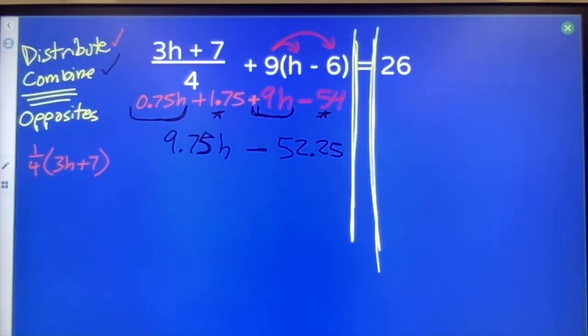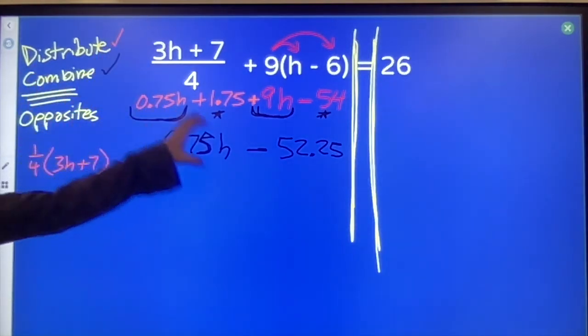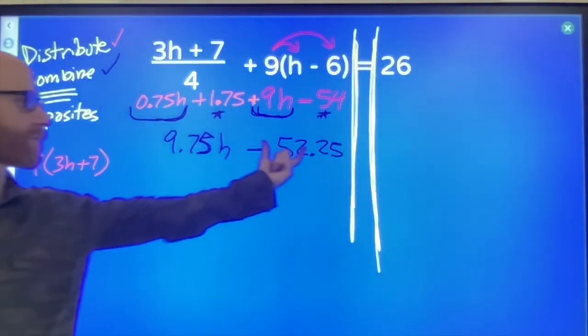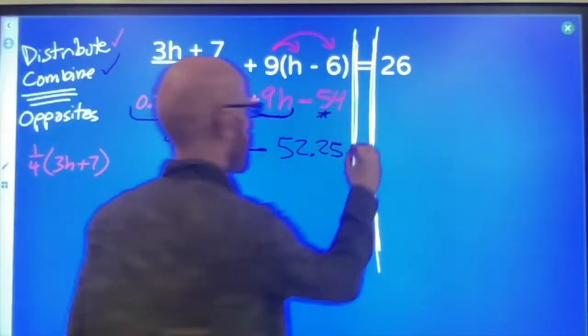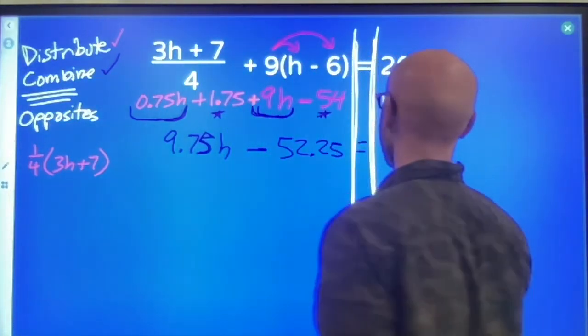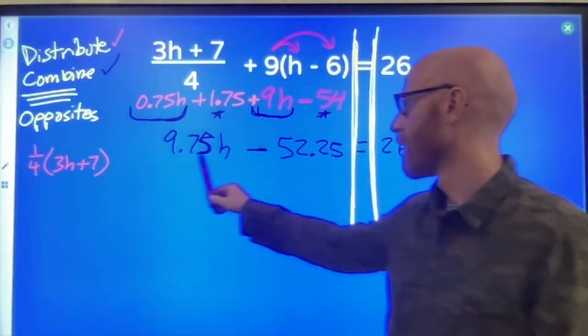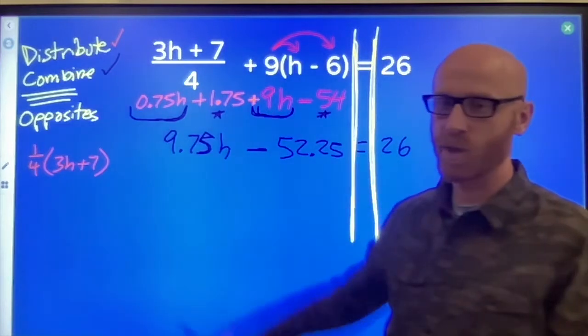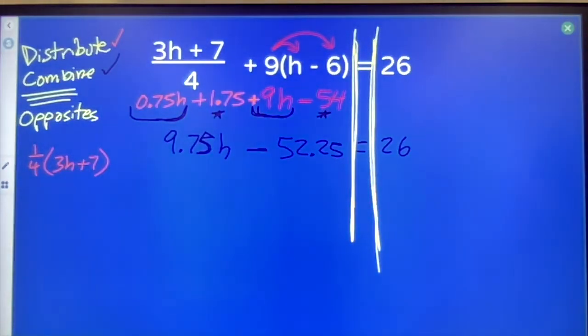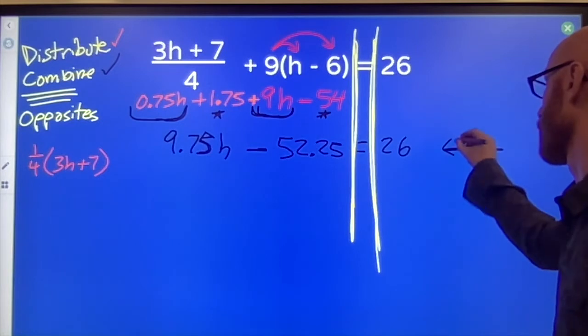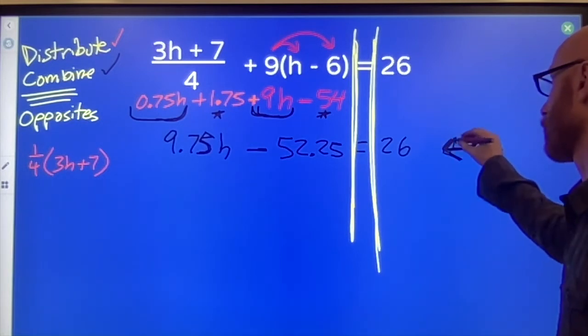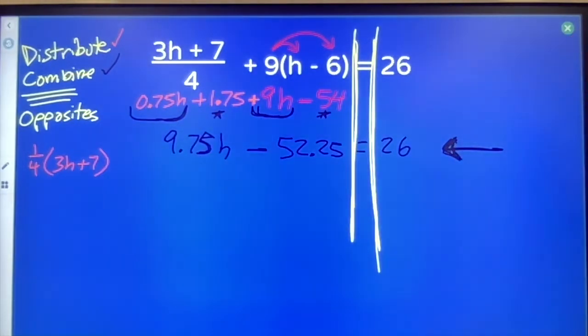I've distributed, I've combined things that could be combined. I can't combine this with this because that's got an h and that doesn't. We haven't messed with the other side yet, but at this point, this setup should look familiar. If you don't know what to do from here, you need to go back to two-step equations before you start dealing with the more complicated stuff.